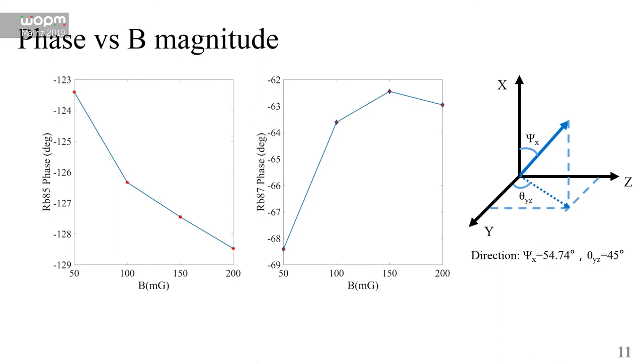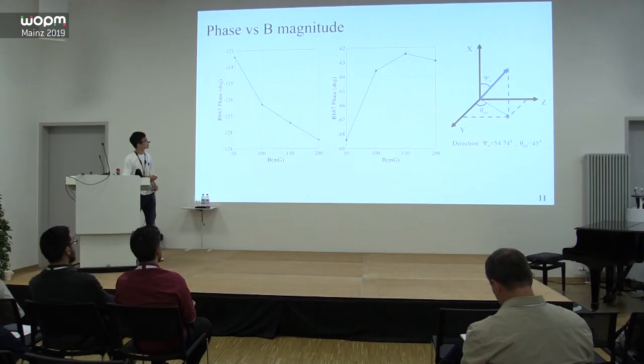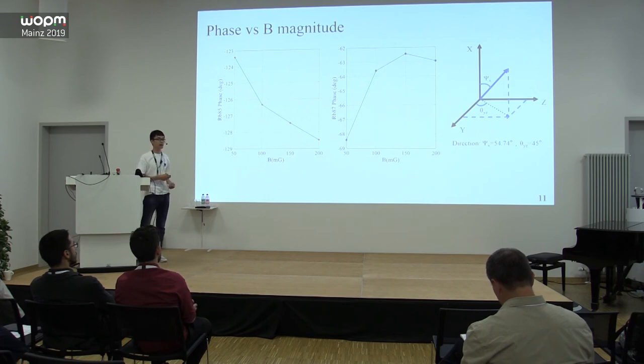Another question we are concerned about is whether the phase output θ will change with different magnitudes of the field. We can see that θ changes with B magnitude, which is bigger than we simulated for a single isotope.